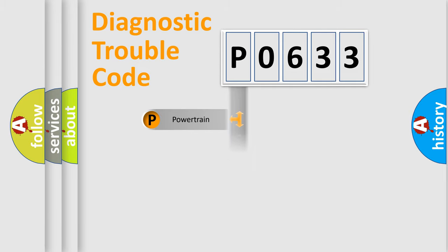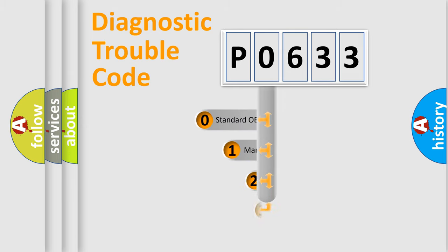Powertrain, body, chassis, and network. This distribution is defined in the first character code.